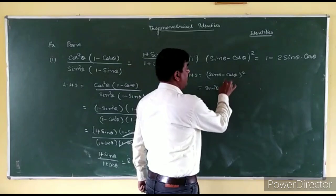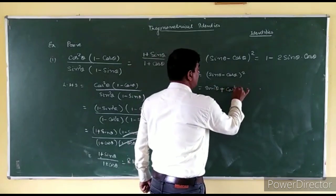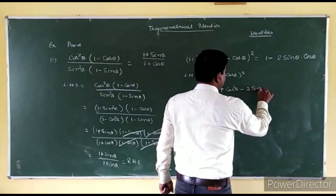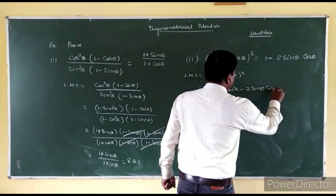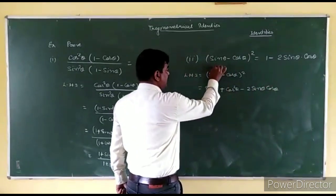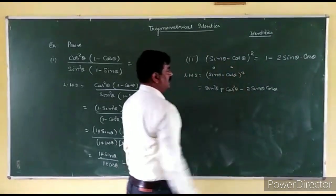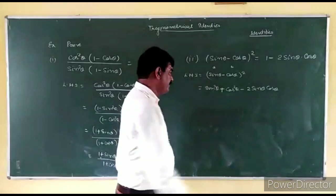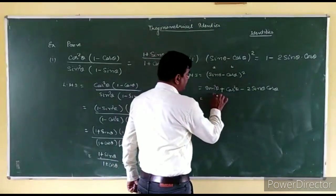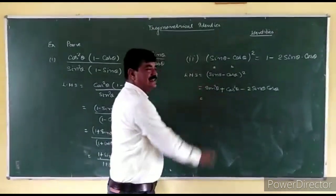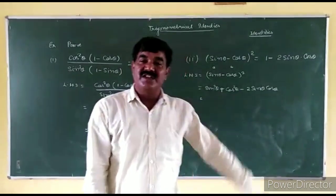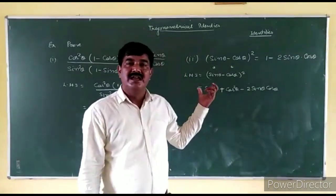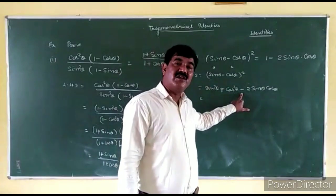The expansion of (a - b) whole square is equal to a square plus b square minus 2ab. Here, consider a as sin theta and b as cos theta. So (a - b) whole square gives us a formula: sin square theta plus cos square theta minus 2 sin theta cos theta. This ties back to the first formula — sin square theta plus cos square theta equals 1.